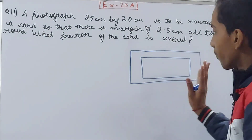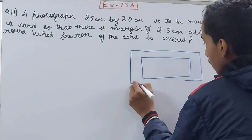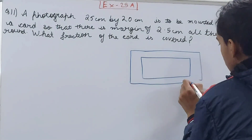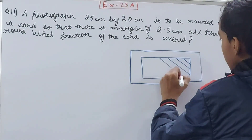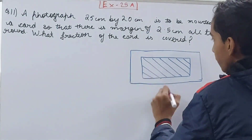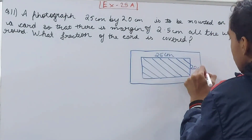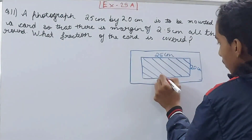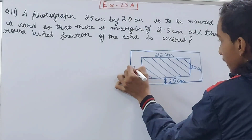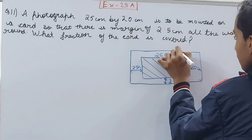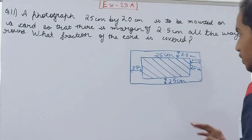We have to put it in the center, and the condition is there is a margin of 2.5 centimeters all along the way. See, if this is my photograph — let me shade this — the shaded part is for the photograph. This photograph is 25 centimeters by 20 centimeters, and there is a margin of 2.5 centimeters on all four sides.